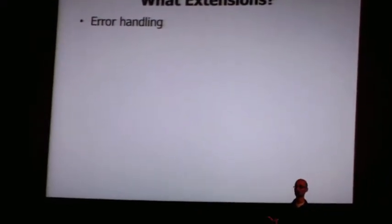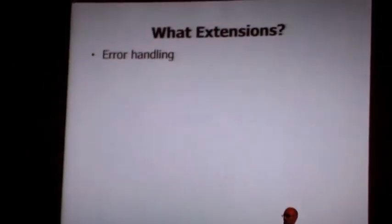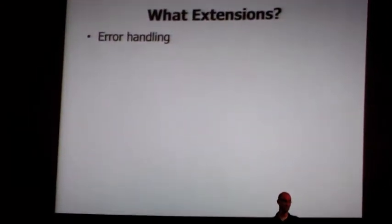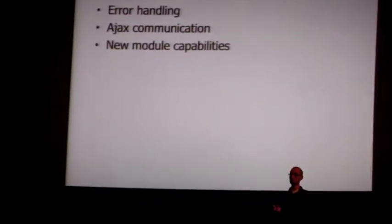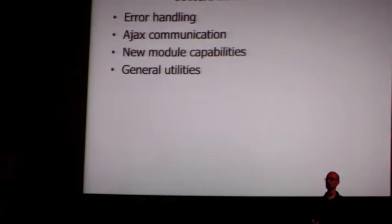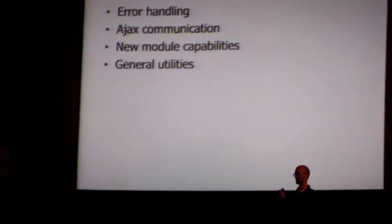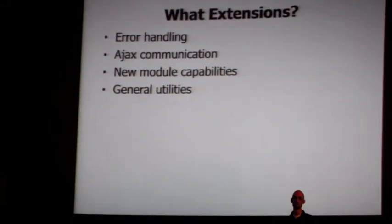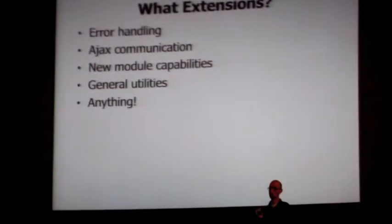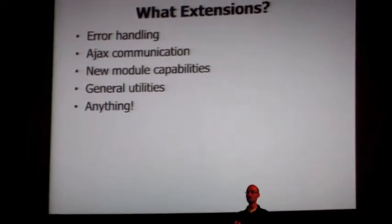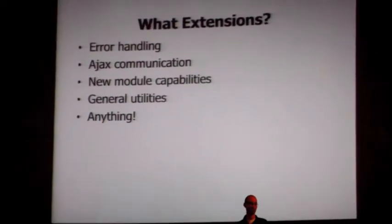What sort of extensions? For error handling, maybe you want something sending errors back to the server. Ajax communication is a really big one. New module capabilities — maybe modules initially aren't allowed to do something and you want to enable that by popping in an extension. And general utilities — if you want to add little helpers for common tasks, that's a good place. Make sure the application core starts out just managing modules, then add extensions until it does everything you need.